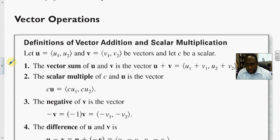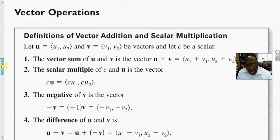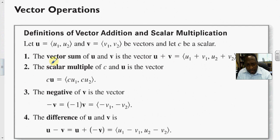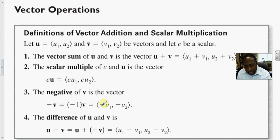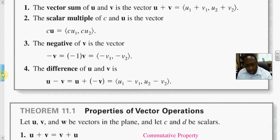Basic properties and operations of vectors: first, vector sum — you add two vectors by adding their corresponding components. You can multiply a scalar times a vector, which multiplies each component by that scalar. The negative of a vector is simply the opposite translation of the components. You can add a vector to the negative of another vector; we call that the difference — you're adding u to the opposite of v.